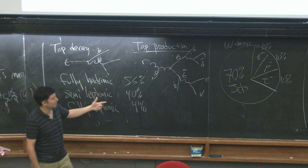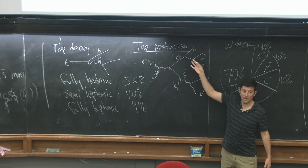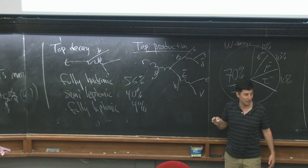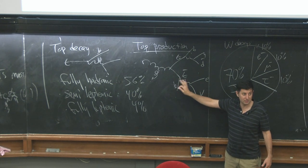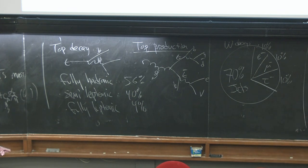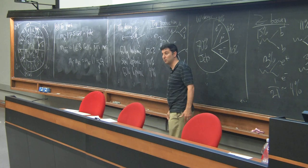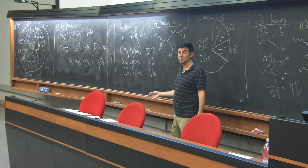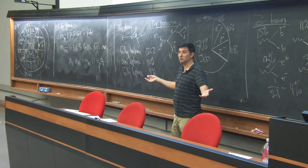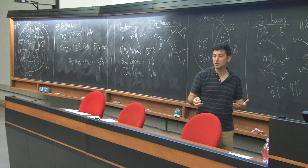The semi-leptonic channel is very nice because you use the leptonic side to tag that it was a TT-bar event, then you have the other side where you can reconstruct the top. If you want to measure the top mass, you tag the TT-bar event using the leptonic side but use the three hadronic jets to figure out the top mass — you don't need to worry about the neutrino since you're not using that side. It's convenient to have two tops at the same time. This is also actually the best sample of hadronically decaying W bosons — if you're interested in hadronic Ws, you look at the TT-bar channel.